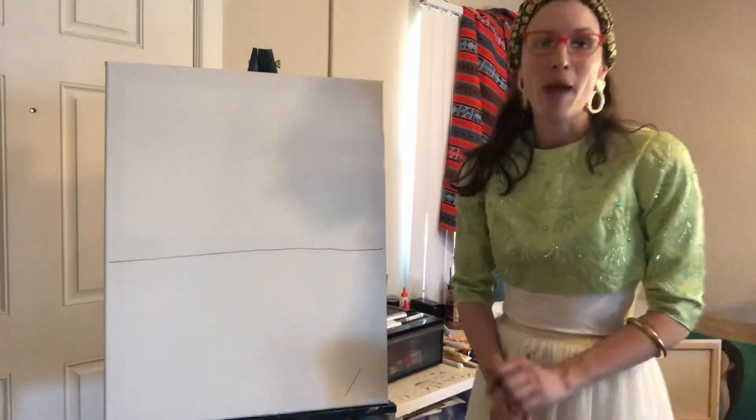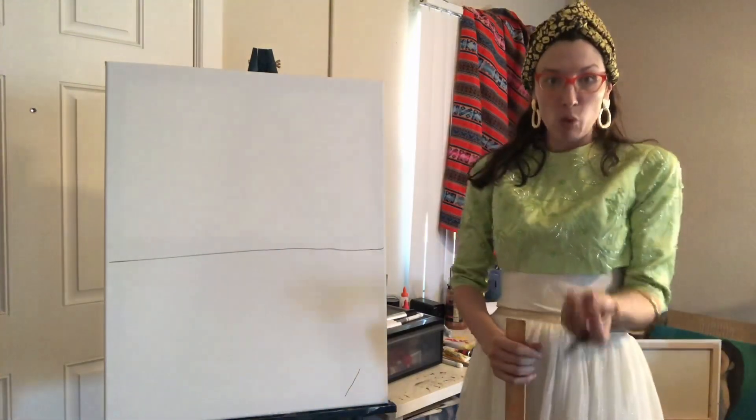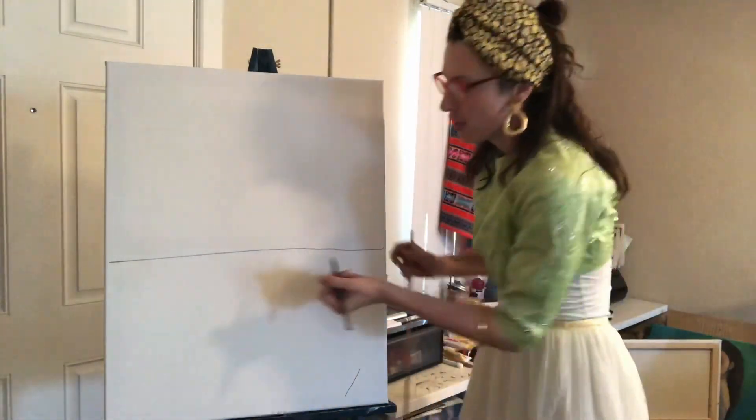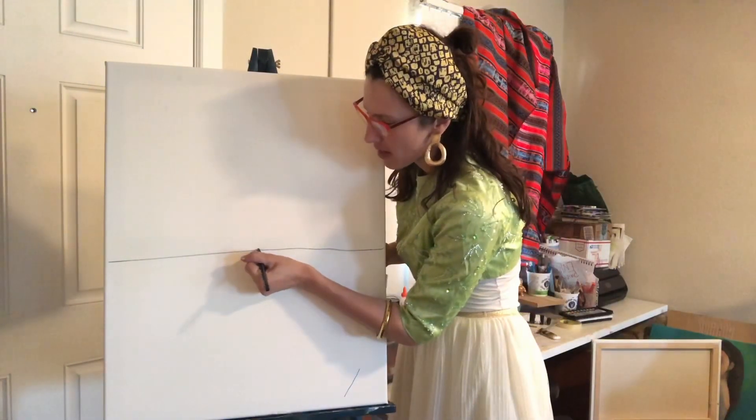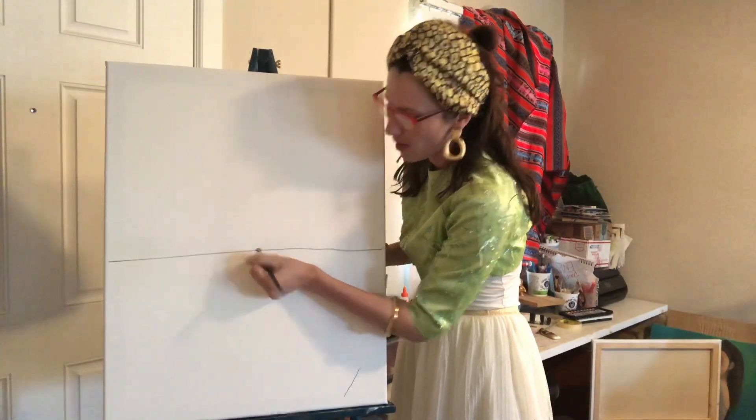Now the next thing we're going to add right in the middle is the vanishing point. That's where everything will eventually get smaller. So I just do a dot right in the middle. And now I've got my vanishing point.